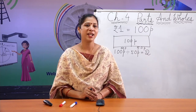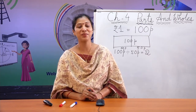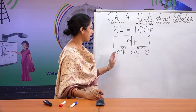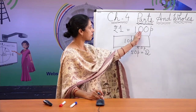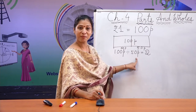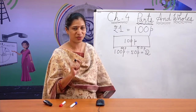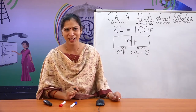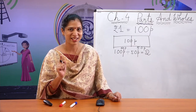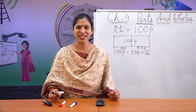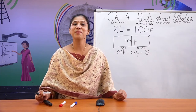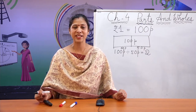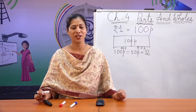Similarly, can you tell me how many 25 paise will make 1 rupee? Very simple. 1 rupee equals 100 paise, so you do 100 paise divided by 25 paise. The answer is 100 divided by 25 equals 4. So there will be 4 twenty-five-paise coins in 1 rupee.